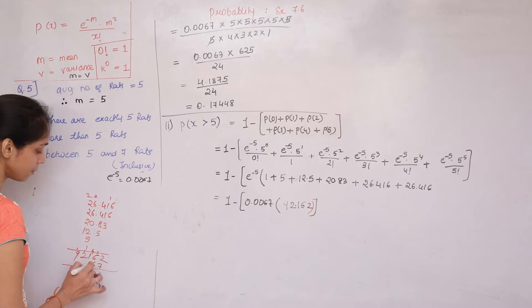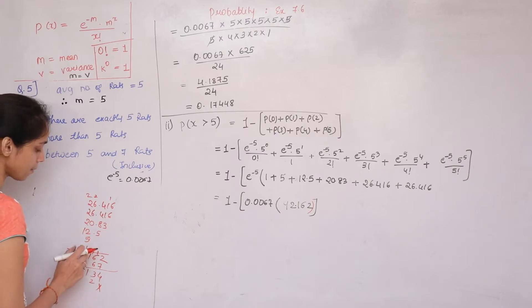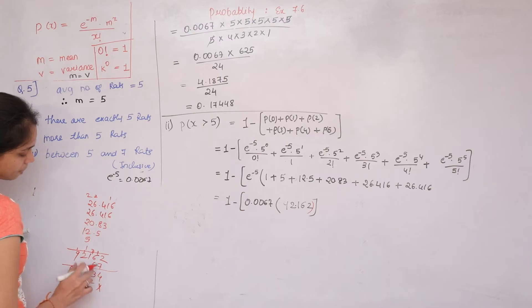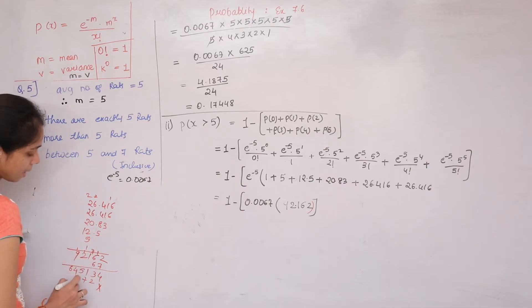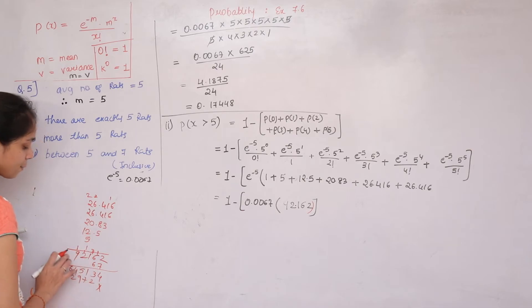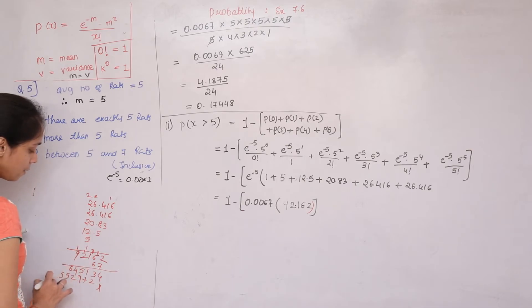1 − 0.6175: working digit by digit — 10−5=5; 9−7=2; 9−1=8; 9−6=3, confirming P(X > 5) = 0.3825. This is our final answer for the second condition.